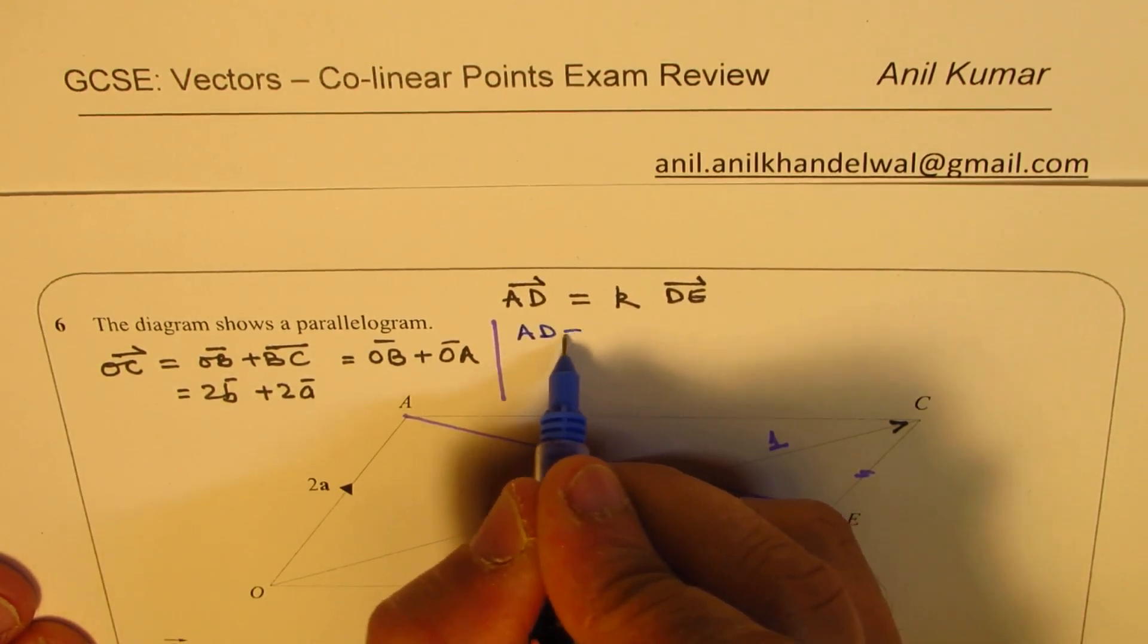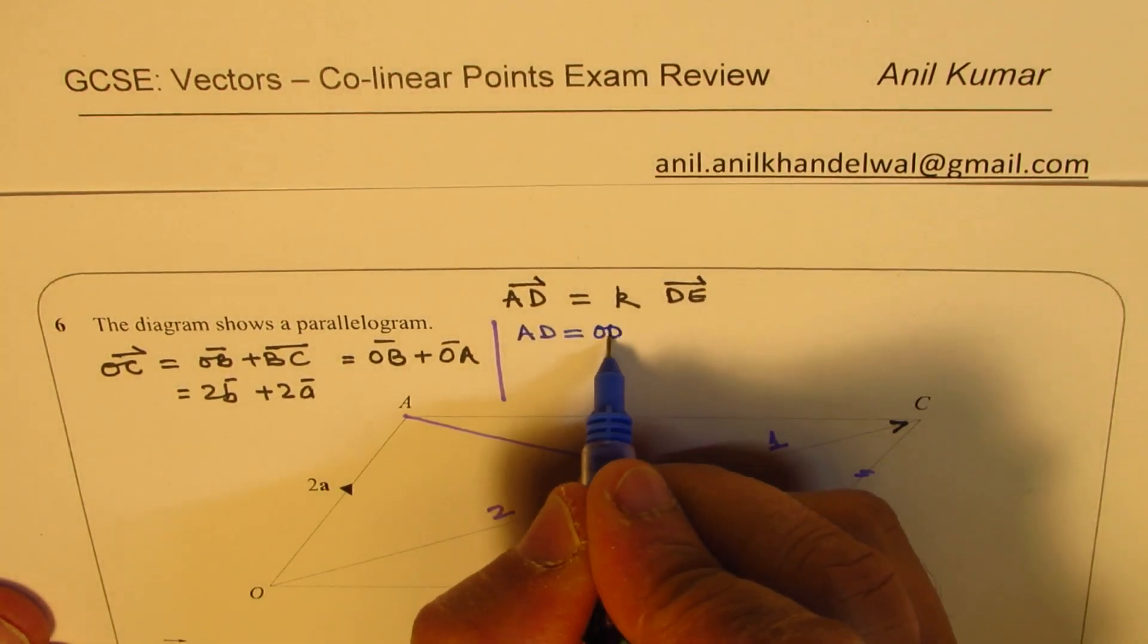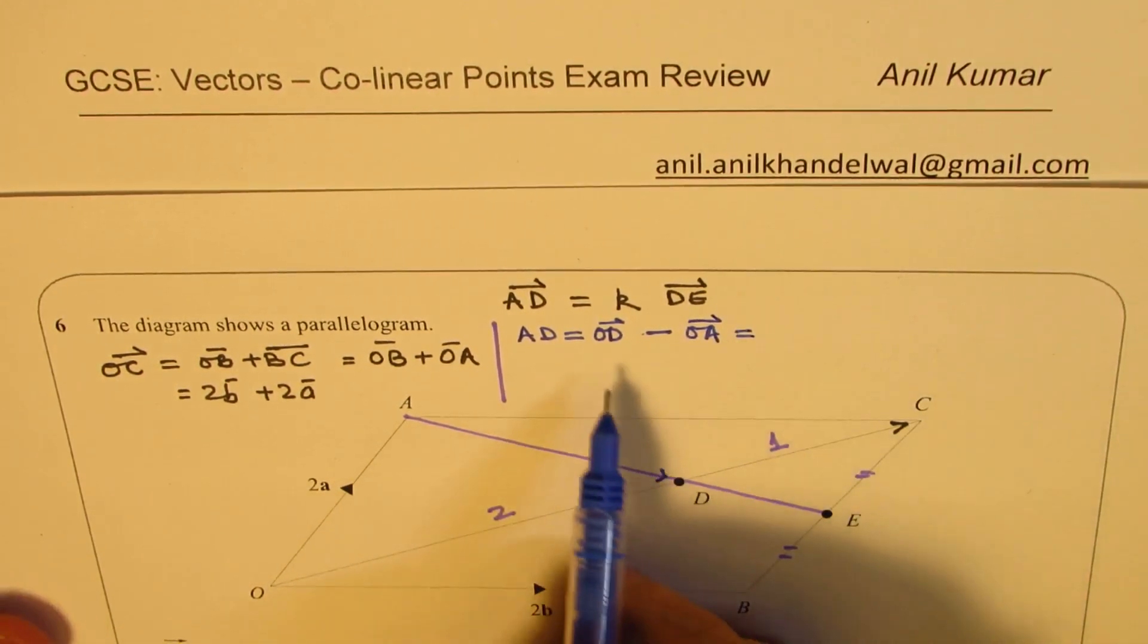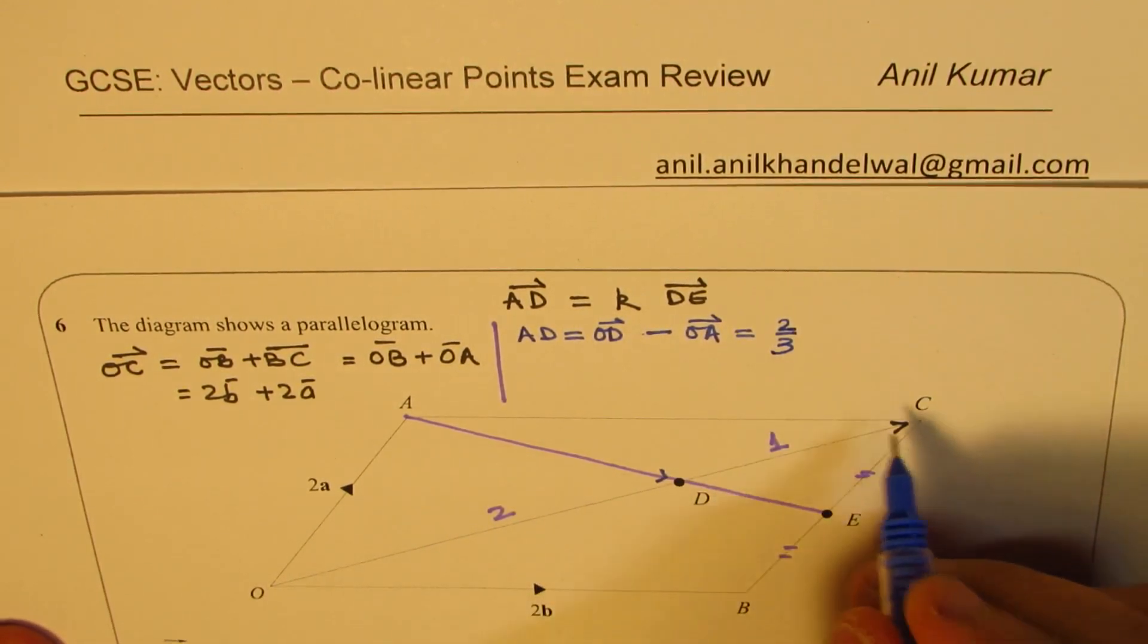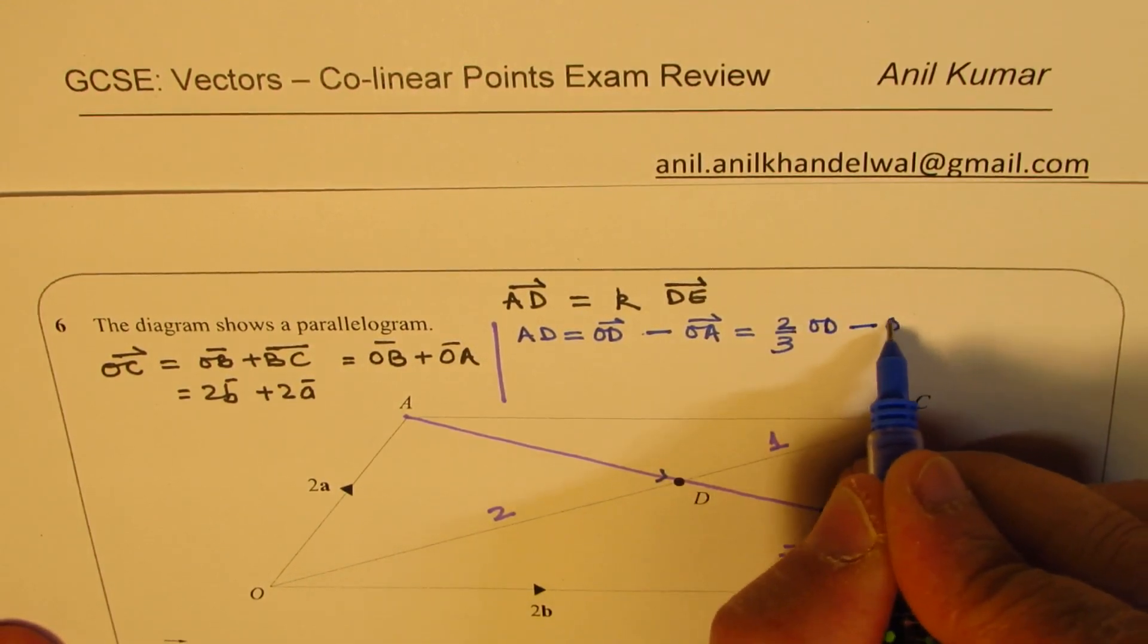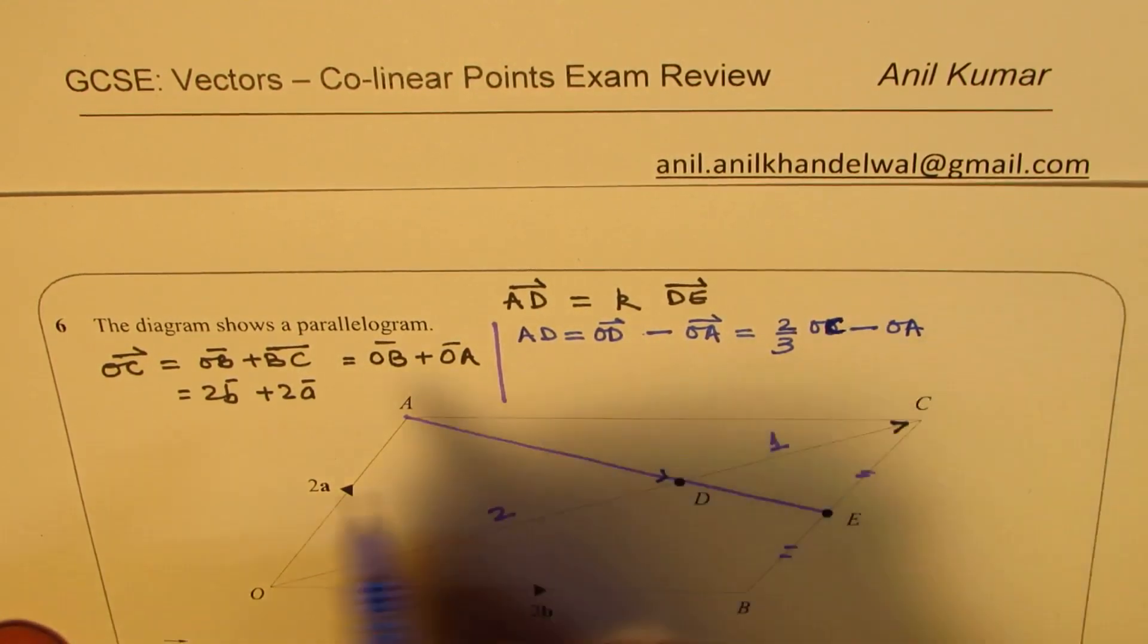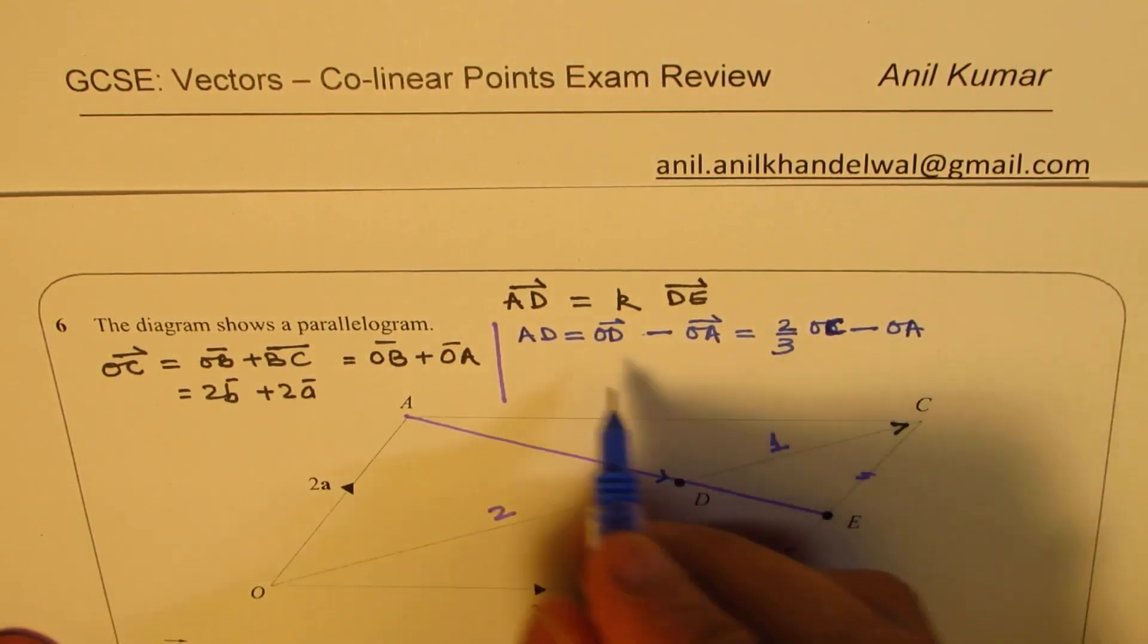So AD is equal to, from A to D, this vector, is equal to OD minus OA. Now OD is scalar multiple of OC, which divides this line in the ratio of 2 to 3. So the total length is 3. So 2/3 of OC is OD. So I could write this as 2/3 of OC minus OA. Now we have found that OC is 2B plus 2A, so we could write this as